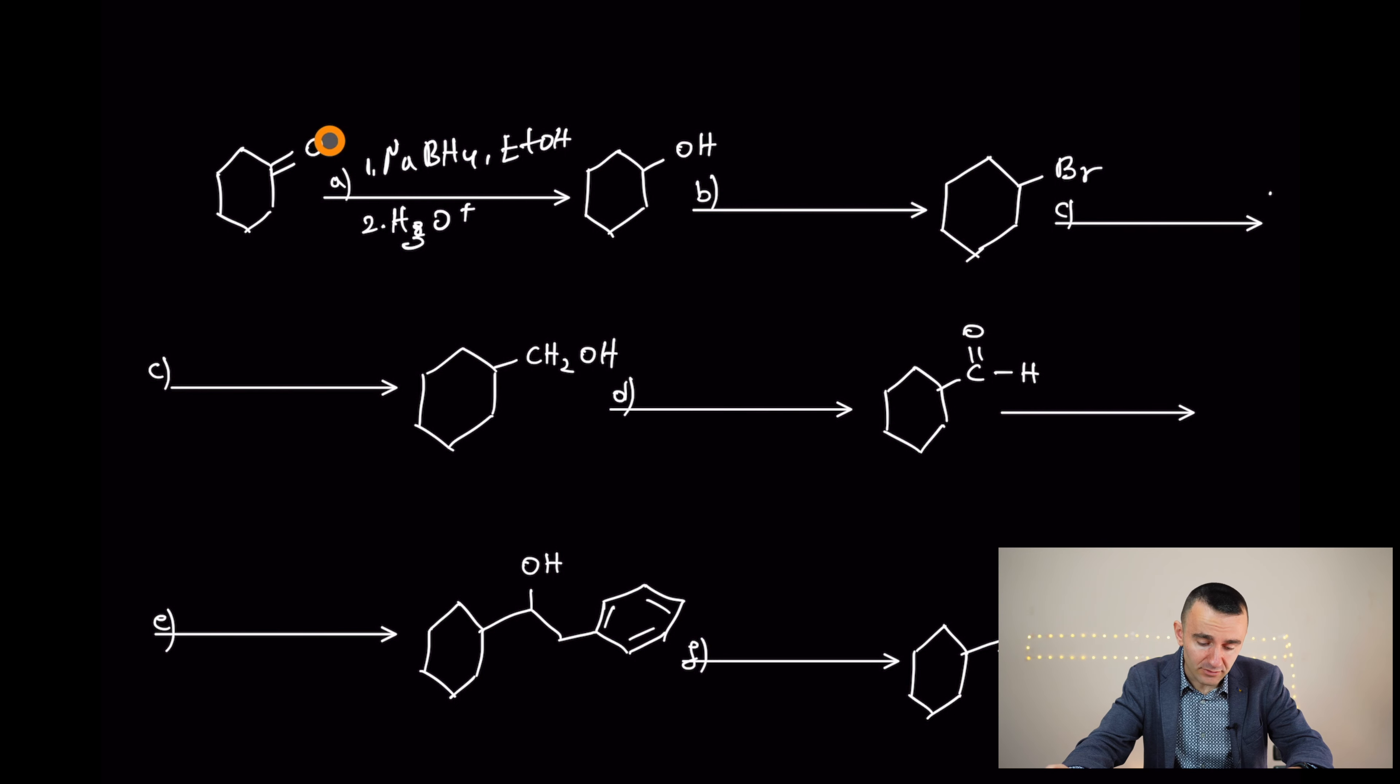Now, to convert secondary alcohols to alkyl halides, what we just used? We used phosphorus tribromide in ether. Right? And after that, to convert this one to an alcohol, what do we use? Grignard reagent.